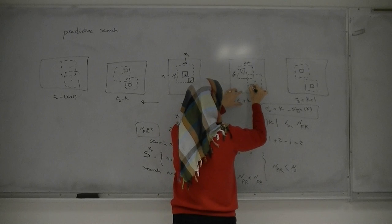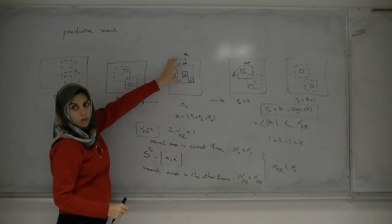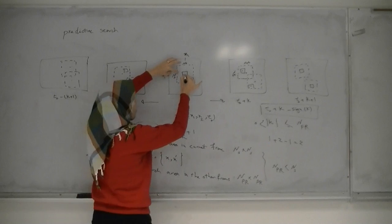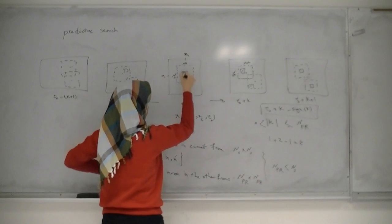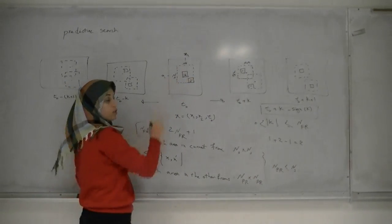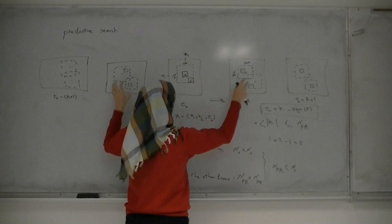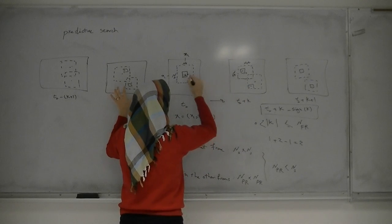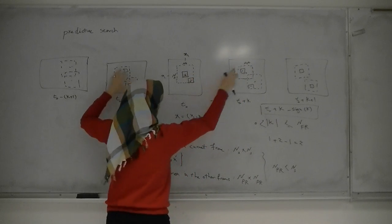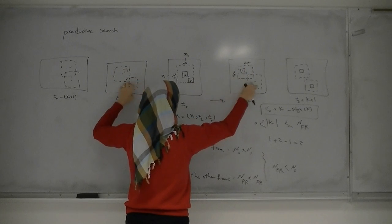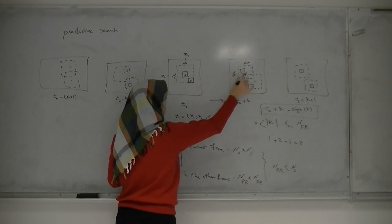For this block matching, in the first step we have just one reference block and one search area. One of the two candidates is the reference block position and the other is found within the search area. For the next step, we use those two positions as new search centers. Step one gives us candidates, step two uses those candidates, and step three continues similarly. We just found these two from the previous step and defined search areas around them.